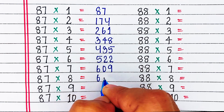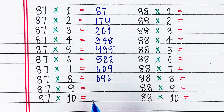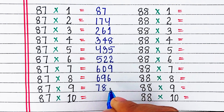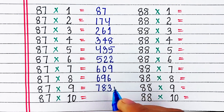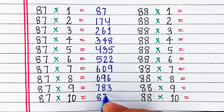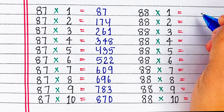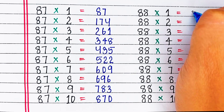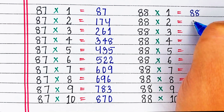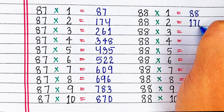87 6s are 522, 87 7s are 609, 87 8s are 696, 87 9s are 783, 87 10s are 870.